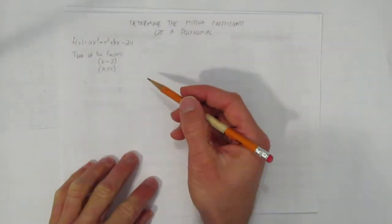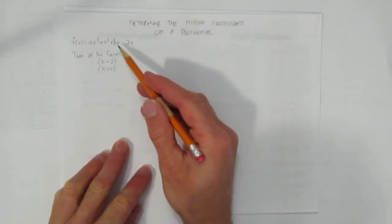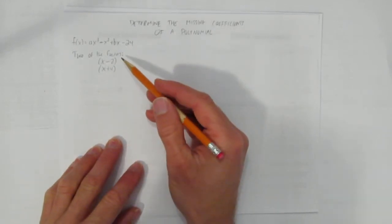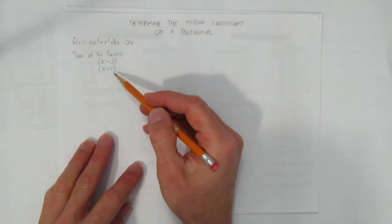In this video, we'll look at how to determine the missing coefficients of a polynomial. The polynomial given is f of x equals ax cubed minus x squared plus bx minus 24. And we're told that two of the factors are x minus 2 and x plus 4.